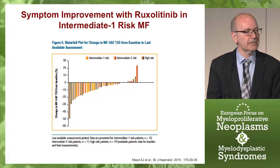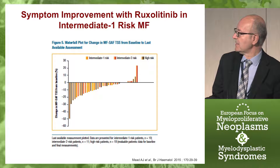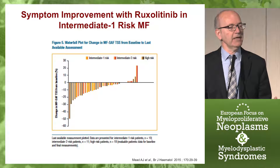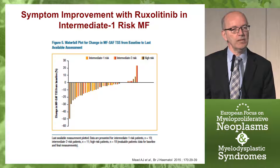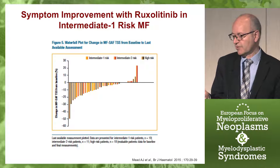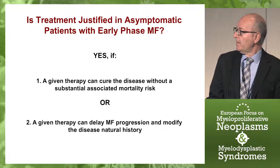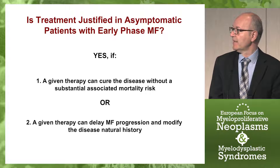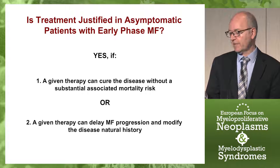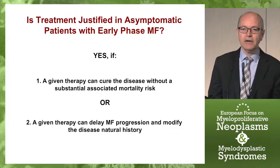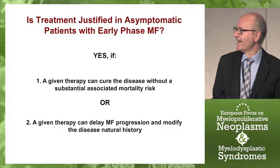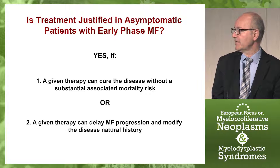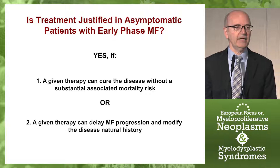The same applies to constitutional symptoms — there were patients who clearly responded, as expected, because we know that in intermediate-two and high-risk myelofibrosis, patients responded very well to ruxolitinib when they had constitutional symptoms. But what about asymptomatic patients? Is treatment justified in patients who are asymptomatic and have early-phase myelofibrosis? The answer would be yes only if a given therapy can cure the disease without substantial associated mortality risk, or if a therapy can delay the progression of the disease and modify its natural history.